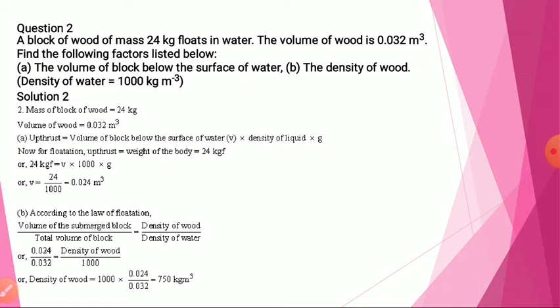Next question: a block of wood of mass 24 kg floats in water. The volume of wood is 0.032 meter cube. Find the following: the volume of block below the surface of water, and the density of wood. We will find out with the help of the upthrust force. We know that mass of block is given and volume is given, so we can find the upthrust.